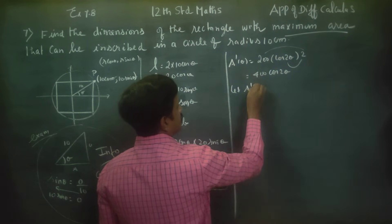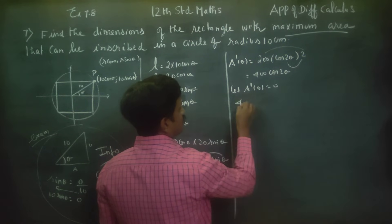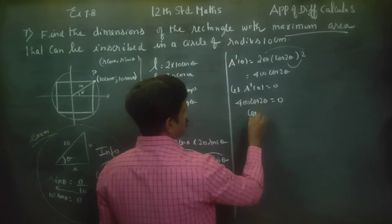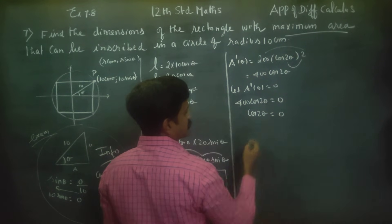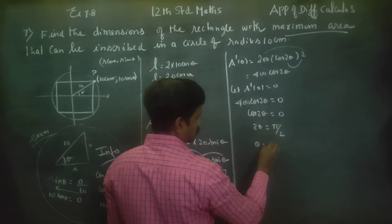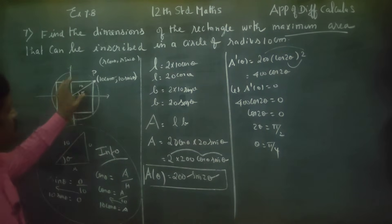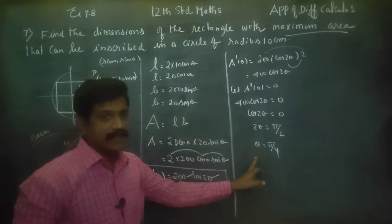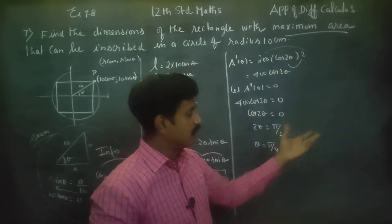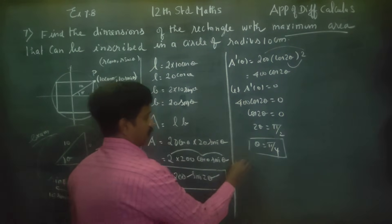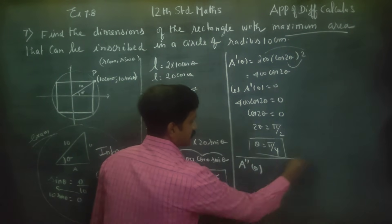Set A'(theta) equal to zero. 400 cos 2theta = 0, so cos 2theta = 0. This means 2theta = 90 degrees, giving theta = pi by 4. We are strictly in the first quadrant.